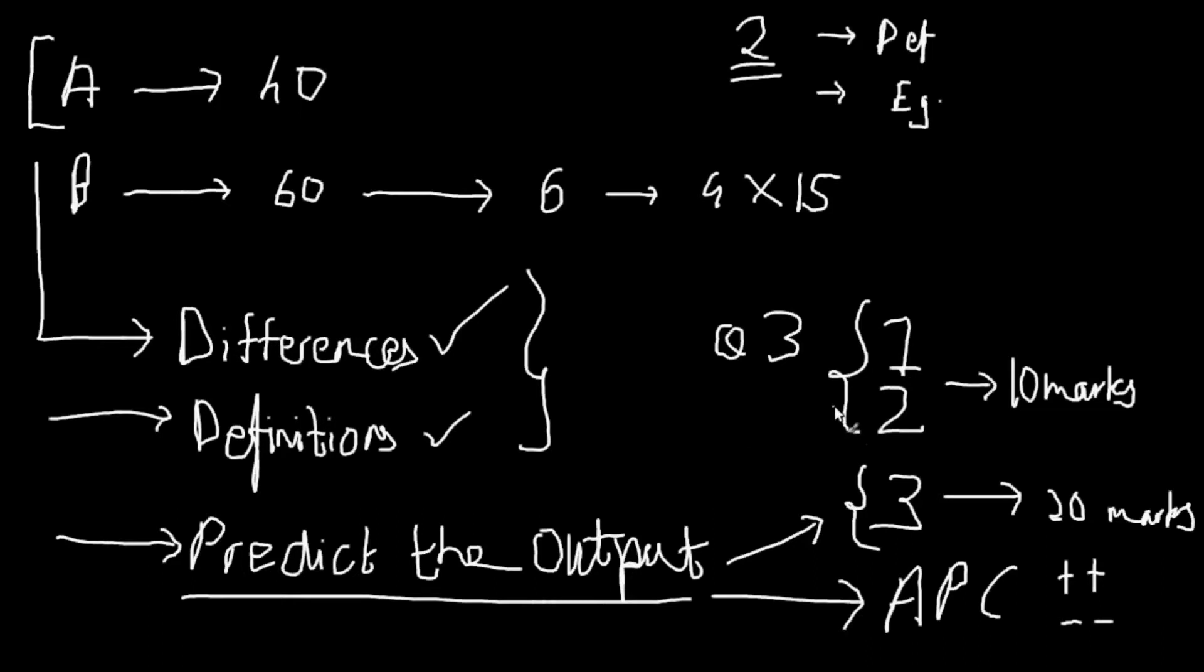So all you need to know is basically definitions and an example. And there'll be other questions like I told you. They'll tell you to convert some formula into a Java statement. So for that, you just need to know your mathematical operators and all that, which again would be in APC. When you're doing predict the output, you'll find them there. So that's all I can tell you about section A.